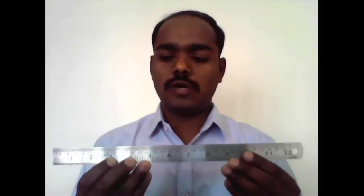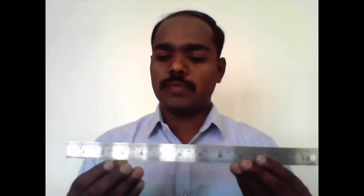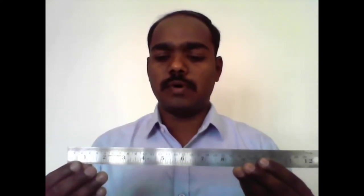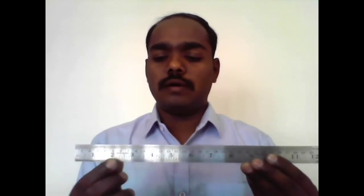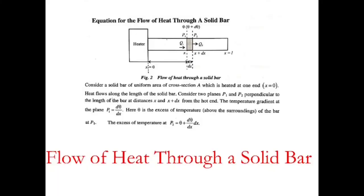Dear students, look at this scale. I am considering this as a solid bar. We are heating the solid bar from one end. By the matter of time, the bar will be heated from one end to the other, that means from the hot end to the cold end. Consider a solid bar of uniform cross section such that it is heated at one end continuously. Heat is transferred along the length of the solid bar over time.